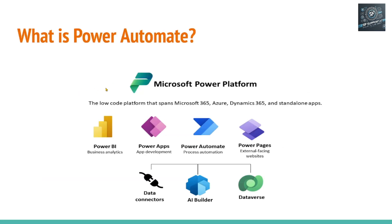To understand Power Automate, let's explore what Microsoft Power Platform is. In this diagram, you can see there are broadly four major components or modules in the Microsoft Power Platform: Power BI, Power Apps, Power Automate — that's what we are discussing — and Power Pages to create websites. There are also three supporting components, including the AI Builder and Connector.